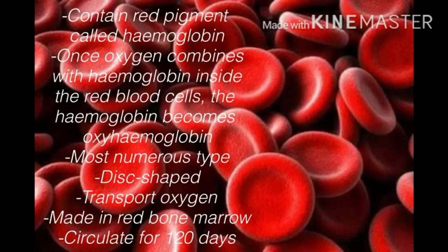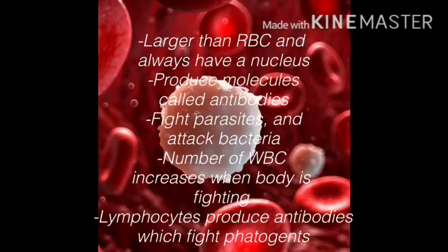Red blood cells circulate for 120 days. White blood cells are larger than red blood cells and always have a nucleus. They produce molecules called antibodies and they fight parasites and attack bacteria. The number of white blood cells increases when the body is fighting infection. Lymphocytes produce antibodies which fight pathogens.